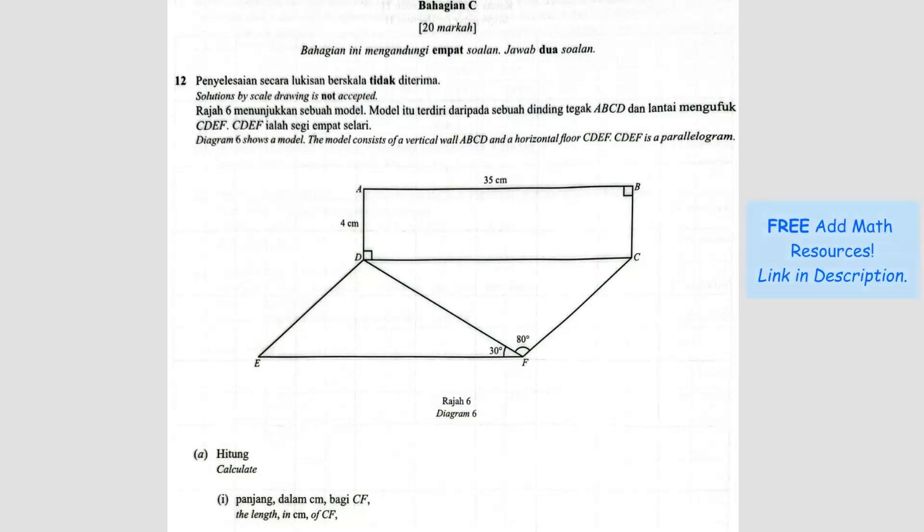Question number 12. Diagram 6 shows a model. The model consists of a vertical wall ABCD. So this one is a vertical wall and horizontal floor CDEF. So this one is a horizontal floor. When you see this, you know one is a vertical wall, one is a horizontal floor. So this is also 90 degrees between the wall and the floor. Now CDEF is a parallelogram, so these two are parallel and these two are parallel.